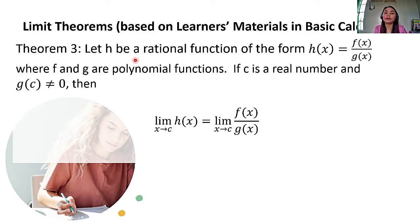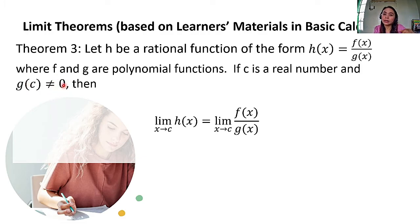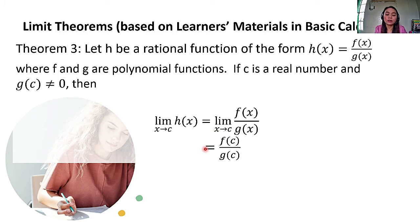Theorem number 3: let H be a rational function of the form H of X equals F of X over G of X, where F and G are polynomial functions. If C is a real number and G of C is not equal to 0 — the denominator cannot be 0 — then the limit of H of X as X approaches C equals F of C over G of C. G of C must not equal 0.